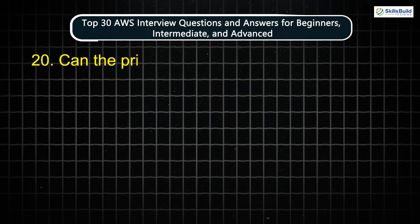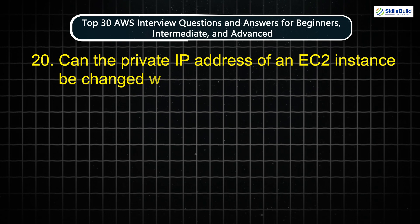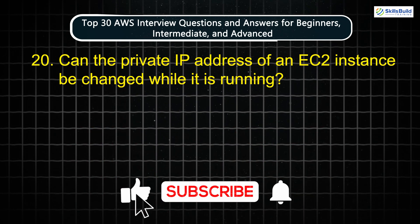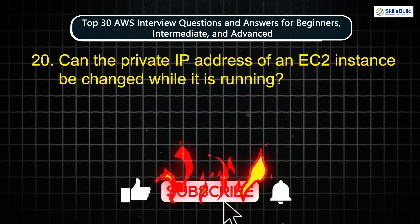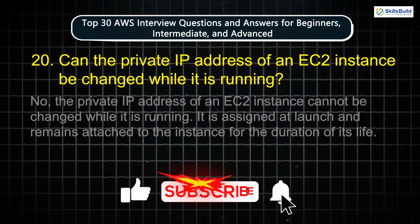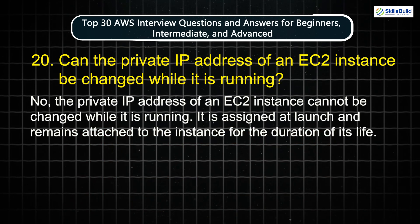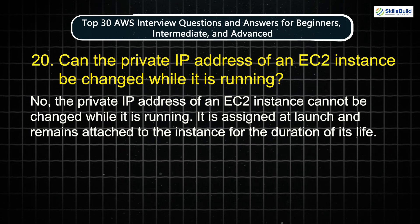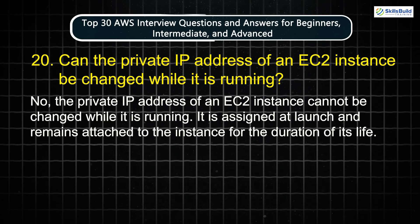Question 20: Can the private IP address of an EC2 instance be changed while it is running? No. The private IP address of an EC2 instance cannot be changed while it is running. It is assigned at launch and remains attached to the instance for the duration of its life.